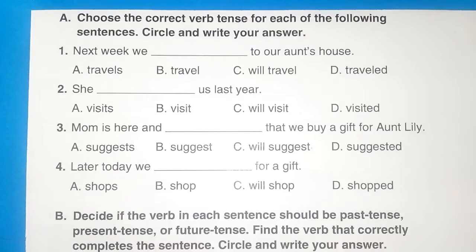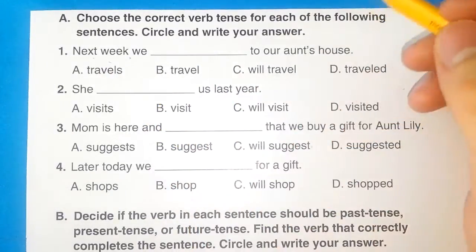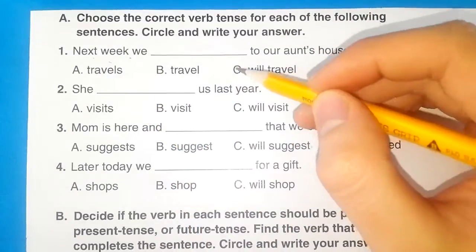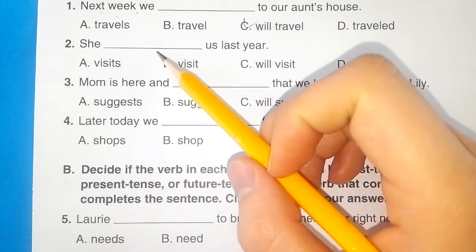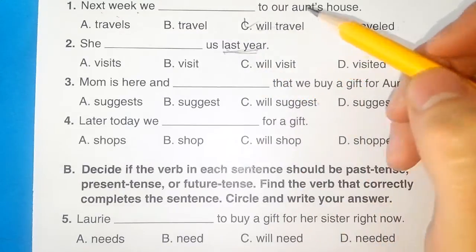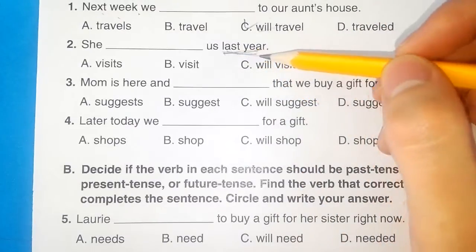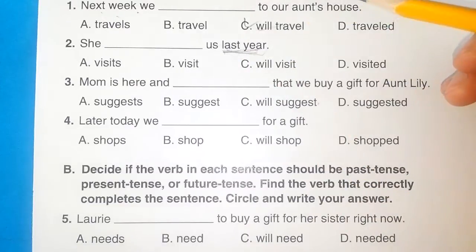Question 1: Next week, we will go to our aunt's house. Question 2: She visited us last year. 과거형이 되겠습니다. 작년에 그녀는 무엇을 했다? She visited.